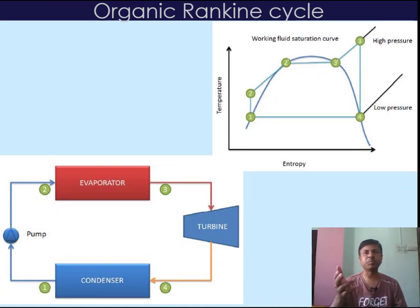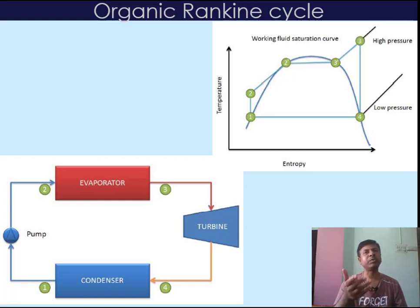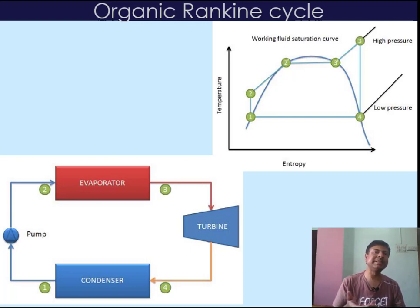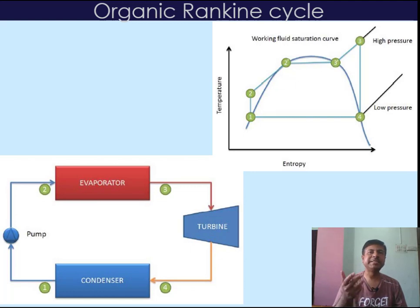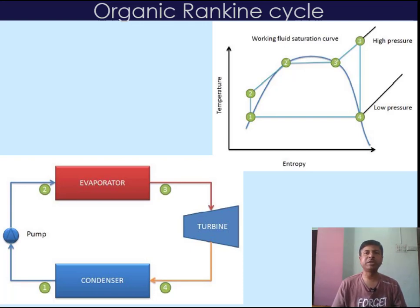After the superheated vapour fluid enters a turbine, where it undergoes expansion through an adiabatic reversible process. The superheating process is necessary in order to guarantee that only vapour is present in the turbine, thus preserving the turbine blades from condensation and erosion. However, the amount of superheating should be kept as low as possible in order to avoid waste of energy and maximize the performance of the entire cycle.